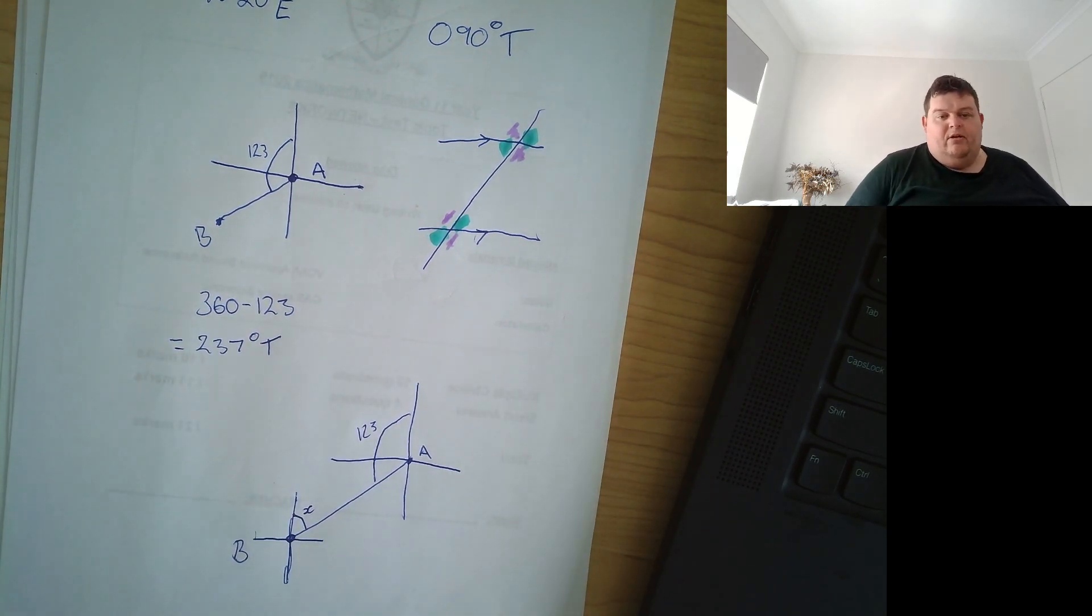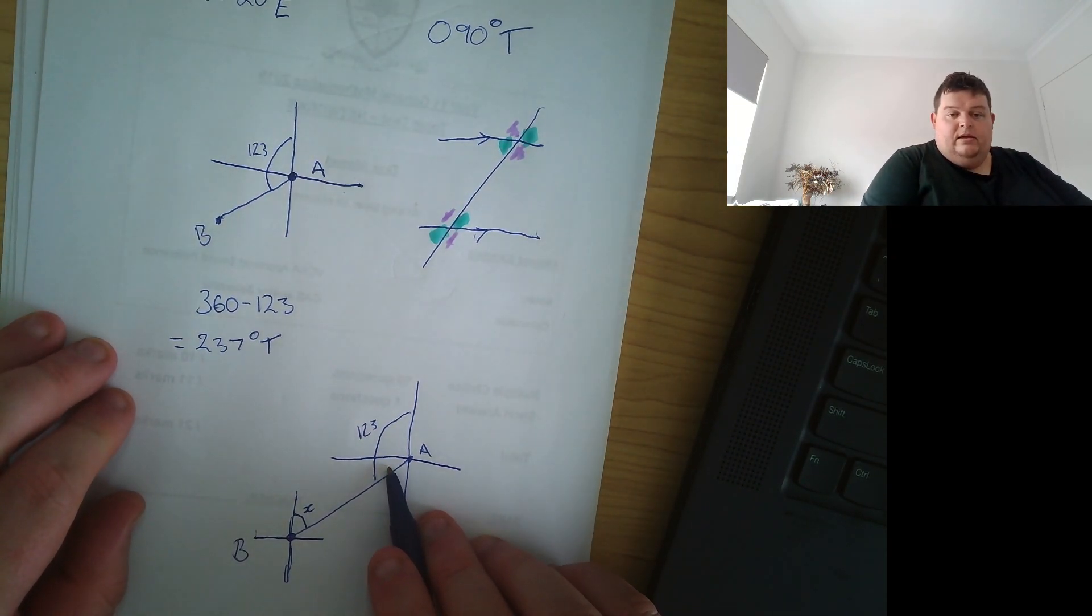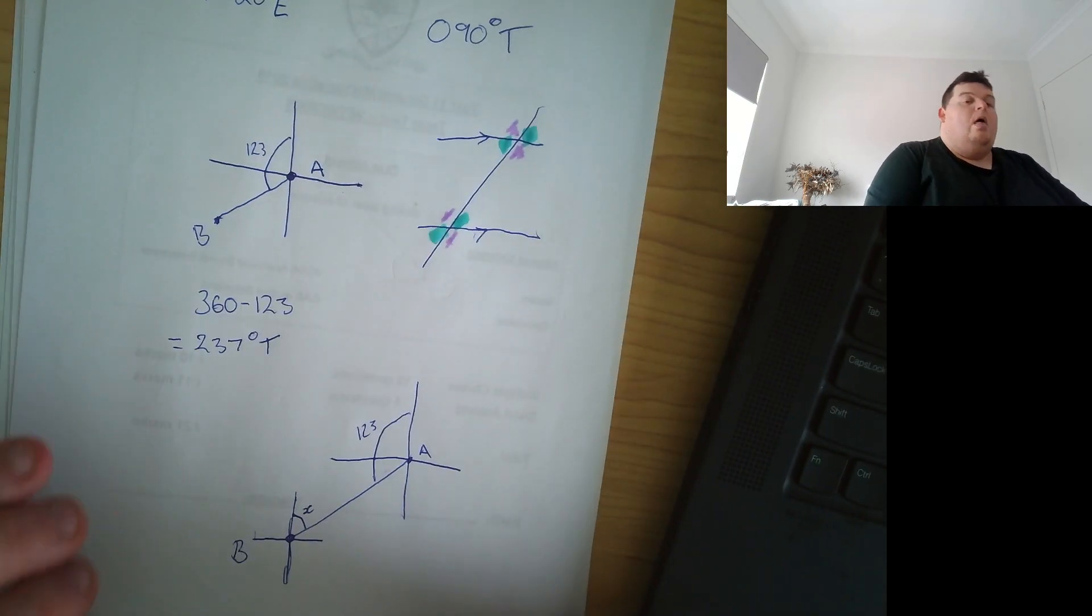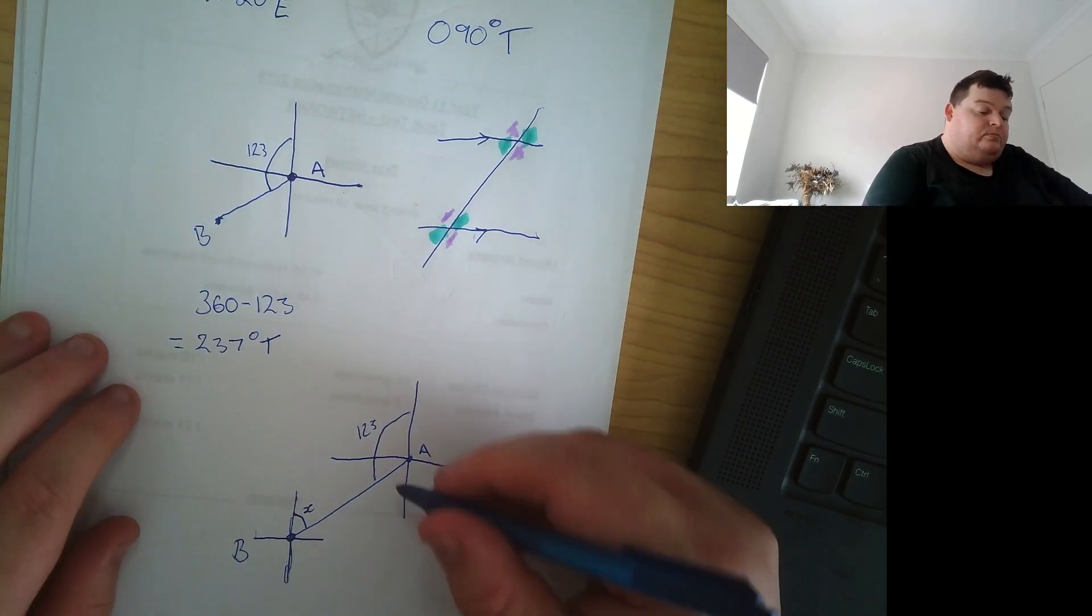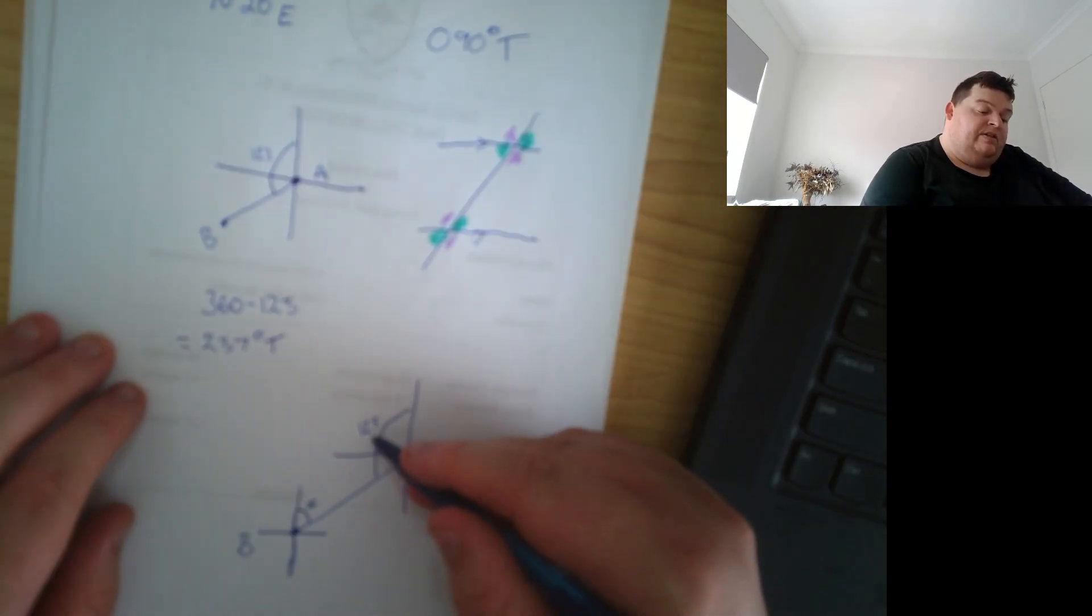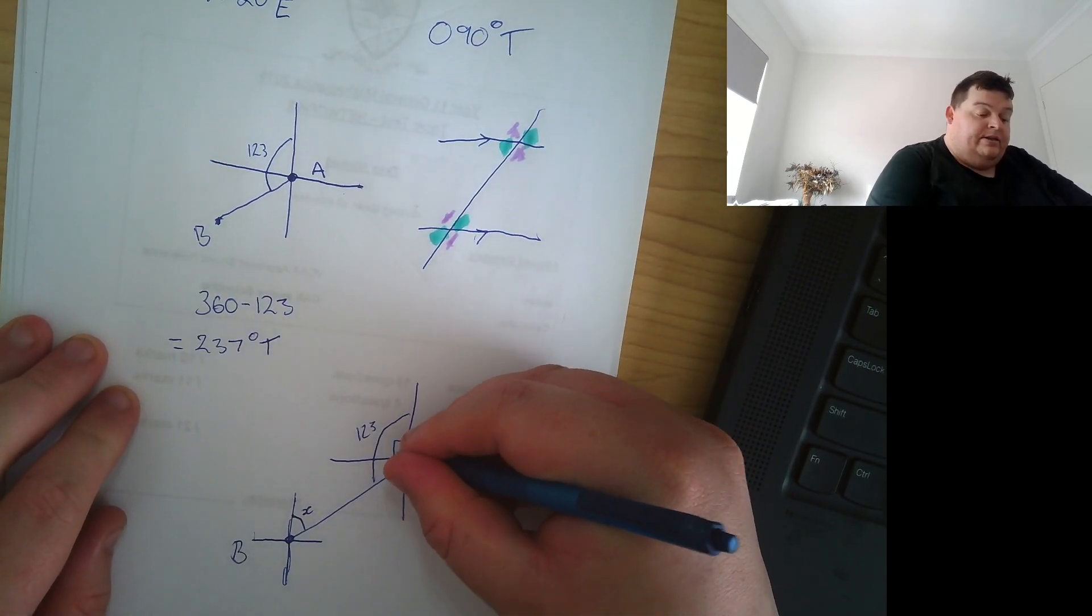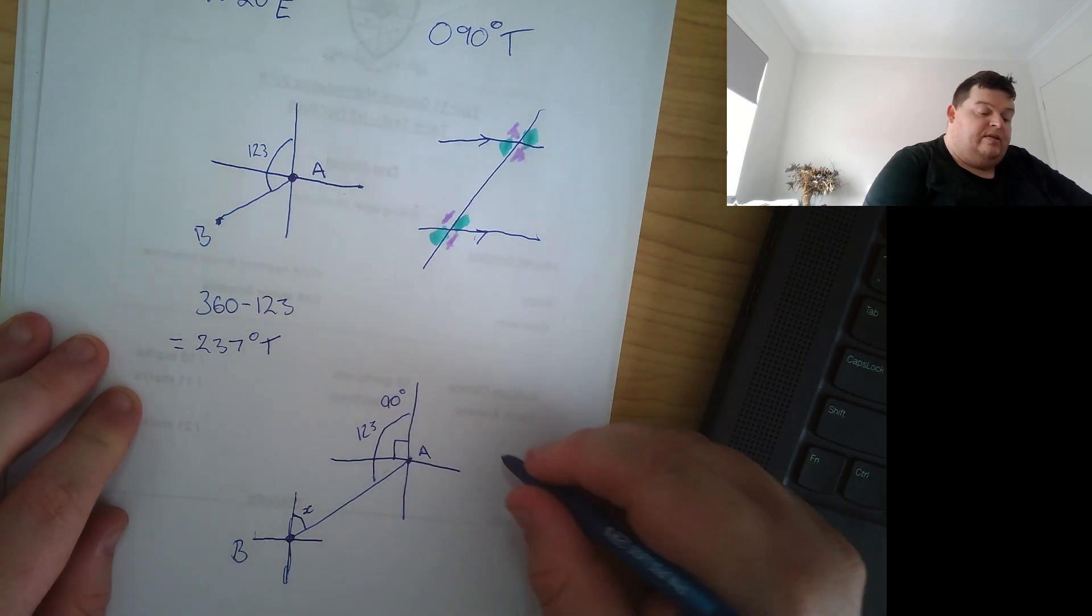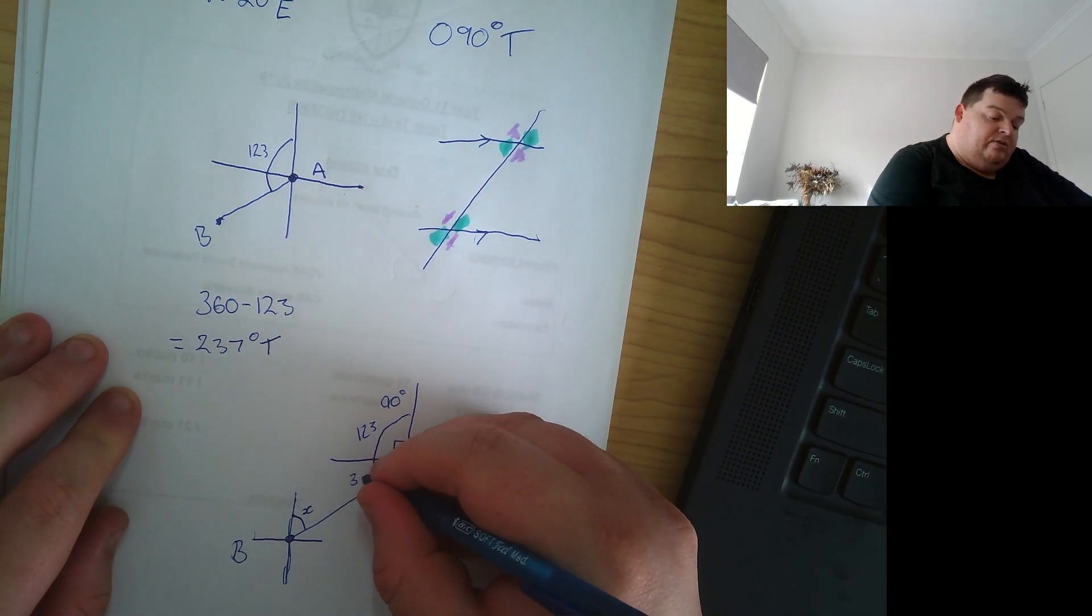Okay. There's a couple ways we can go about doing that. My first thought is we need to find this angle in here and then we'd be able to figure something out with these angles. Okay. So it's like, okay. Now if this is 123, this right angle in here is 90, which means this angle in here is 123 minus 90, right, which is 33 degrees.